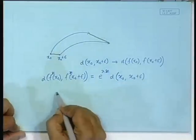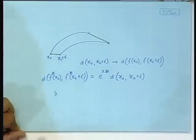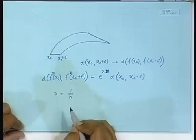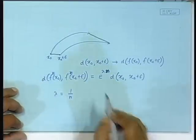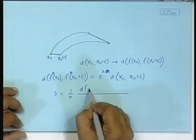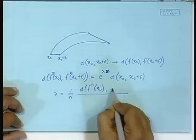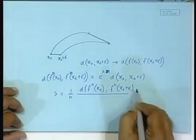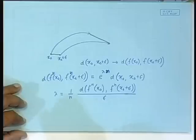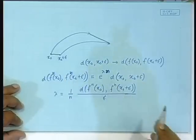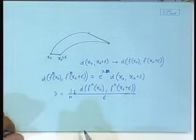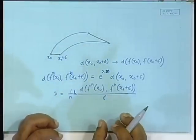Essentially you extract lambda as: lambda = (1/n) * ln[ d(f^n(x₀ + epsilon)) / epsilon ], where f^n denotes the nth iterate. This is the concept of the Lyapunov exponent. We assume the separation increases exponentially — if that is so, then the exponent is defined that way.